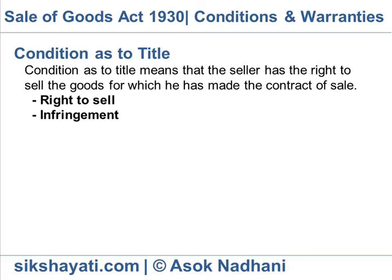Example. K represented to L some goods of a Samsung brand. During the sale of those goods, it was found that the Samsung brand was an infringement of the Samsung trademark. Therefore, L was legally bound to remove the labels of the Samsung brand posted on the goods bought by him. Consequently, the goods became unbranded, which adversely affected the right of the buyer to sell these goods.